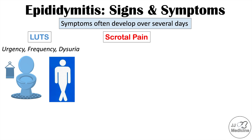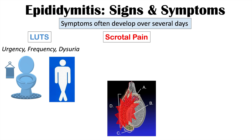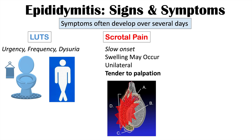Scrotal pain is a hallmark characteristic finding of epididymitis. Since the epididymis is located on the posterior aspect of the testis, inflammation causes scrotal pain. This pain typically has a slow onset, may be accompanied by swelling, is usually unilateral, and the epididymis is tender to palpation — a very key finding on physical examination.